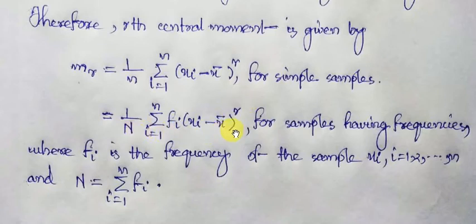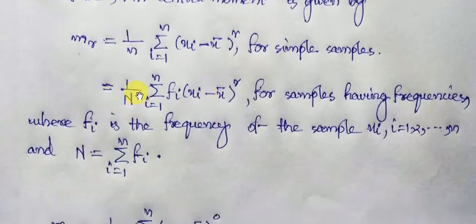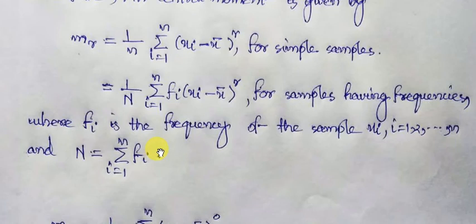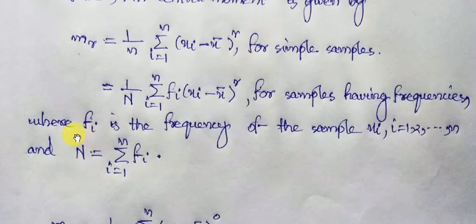Here fᵢ is the respective frequency of statistical observation xᵢ. Capital N is the total number of observations: since x₁ is repeated f₁ times, x₂ repeated f₂ times, and so on up to xₙ repeated fₙ times, the total number of observations is N = summation over i=1 to n of fᵢ, that is f₁ + f₂ + ... + fₙ.